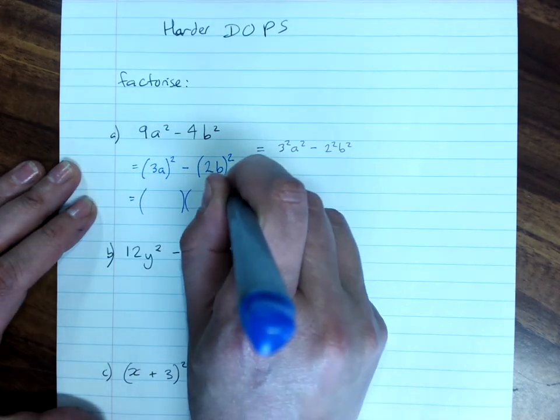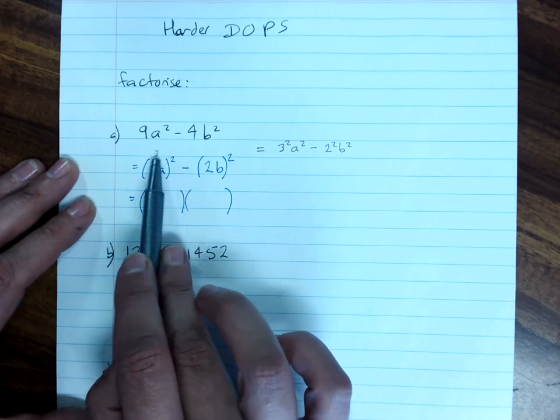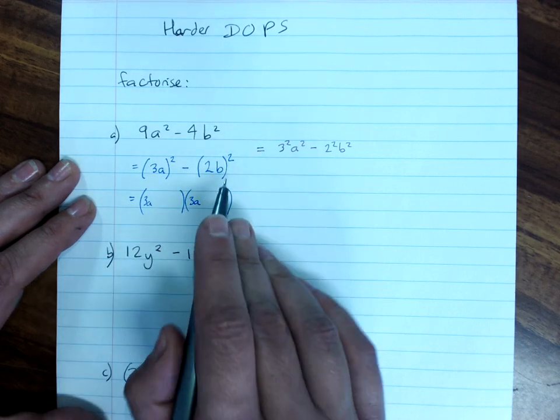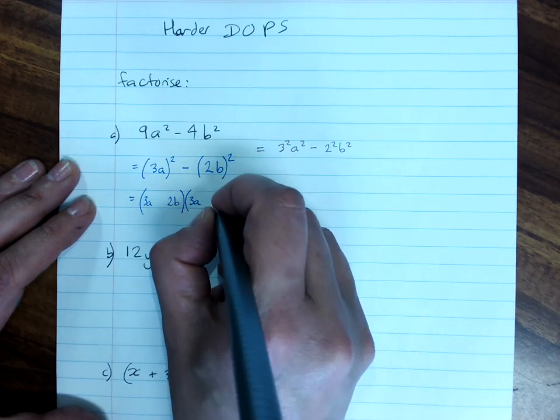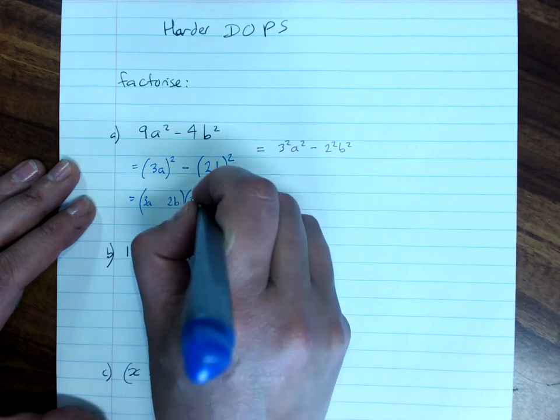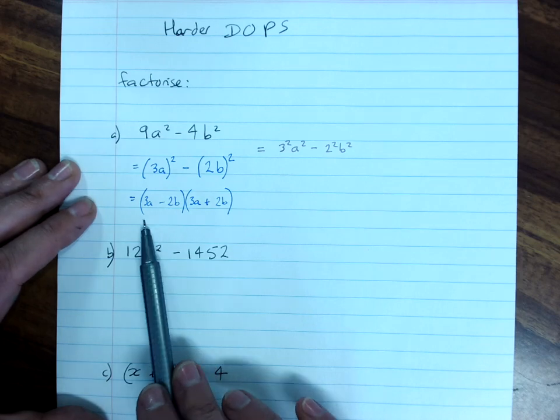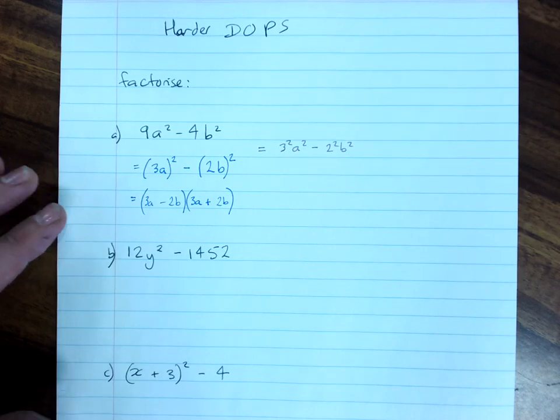And then we recognize this is a difference of perfect squares. Pop our two brackets in. The square root of the first term, well, the first term is 3a squared, so the square root is just 3a. The square root of the second term is 2b. And one of them will be plus and one will be minus. Again, you can expand that back and see if you simplify down to this, and if you do, you've got the right answer.